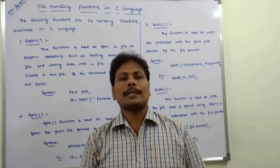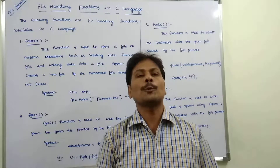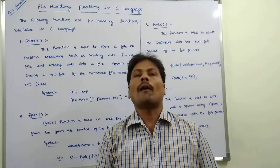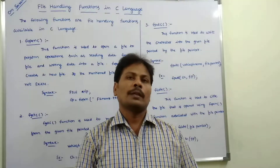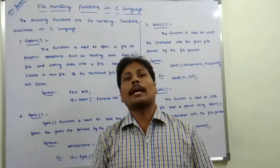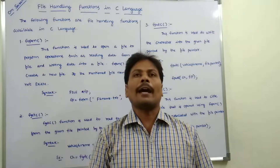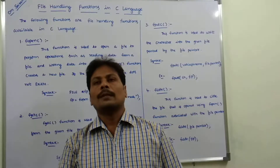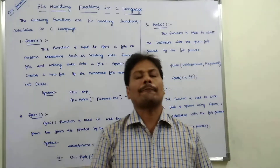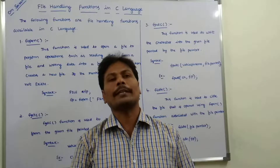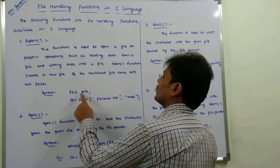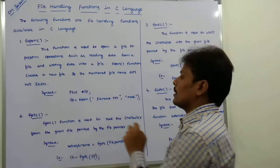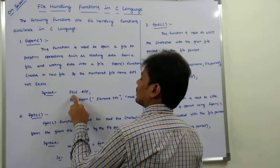The first function is fopen. This function is used for opening a file in a particular mode — either read mode, write mode, or append mode. If the file already exists, the given file is opened. If the file does not exist, then a new file is created with that name. The syntax is: FILE *fp = fopen("filename.txt", mode);